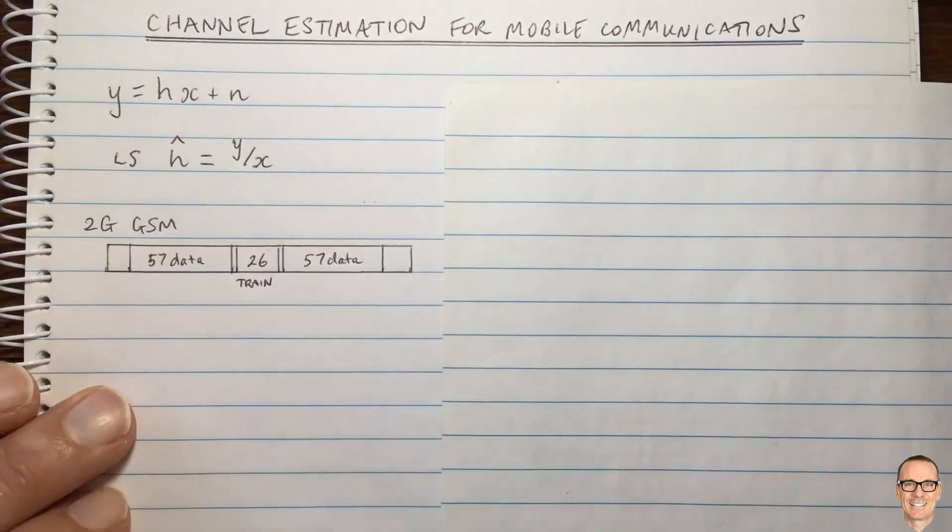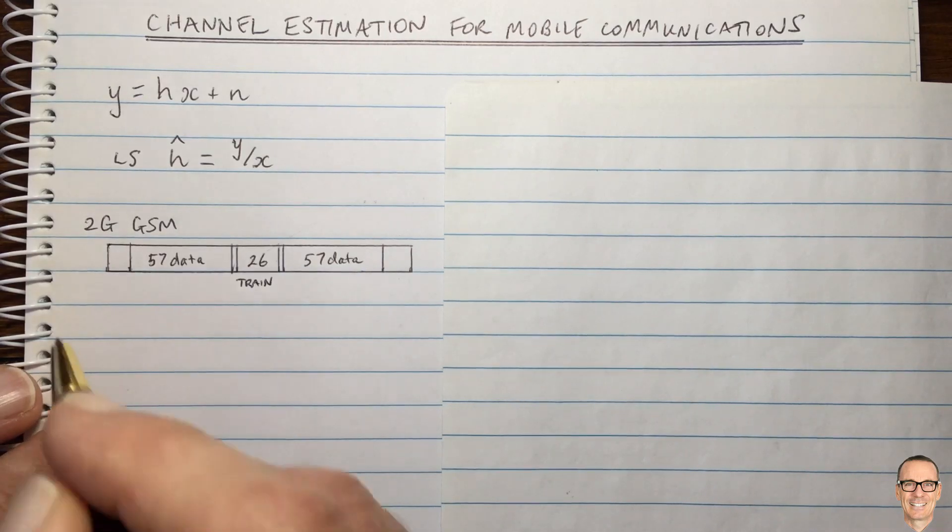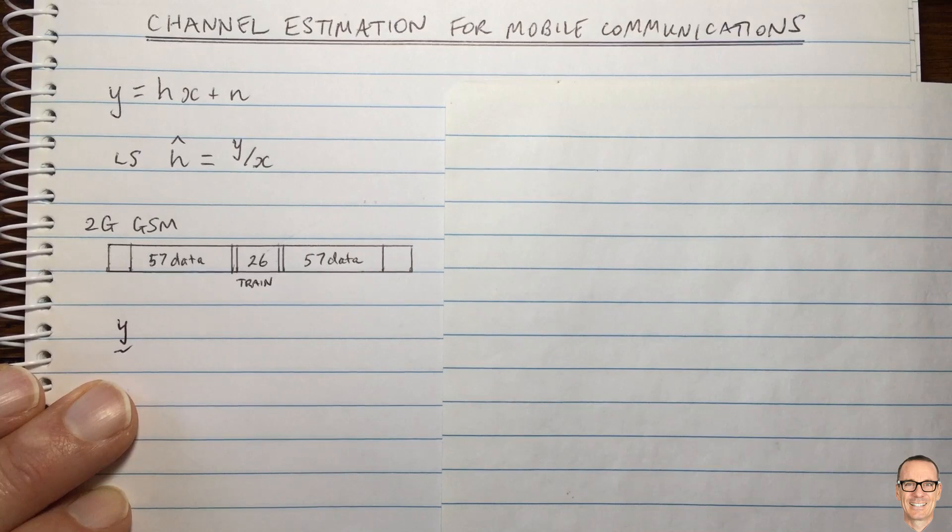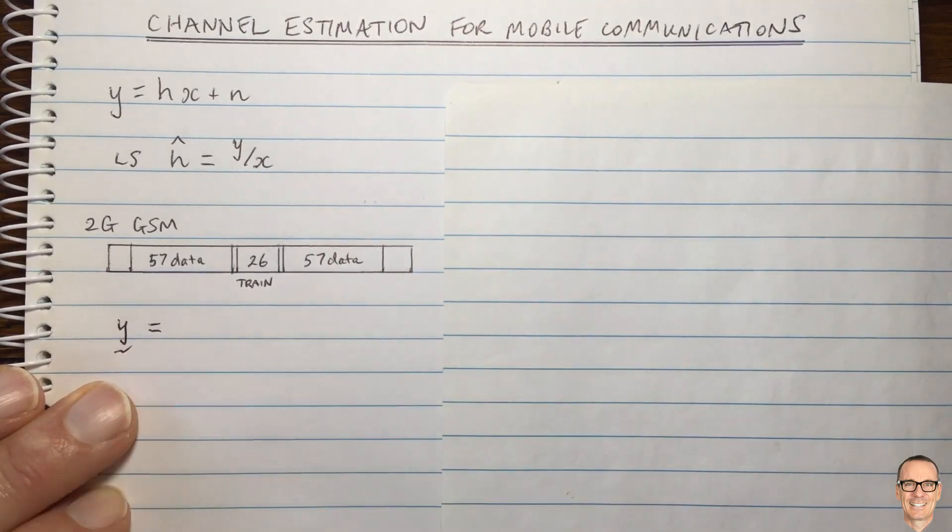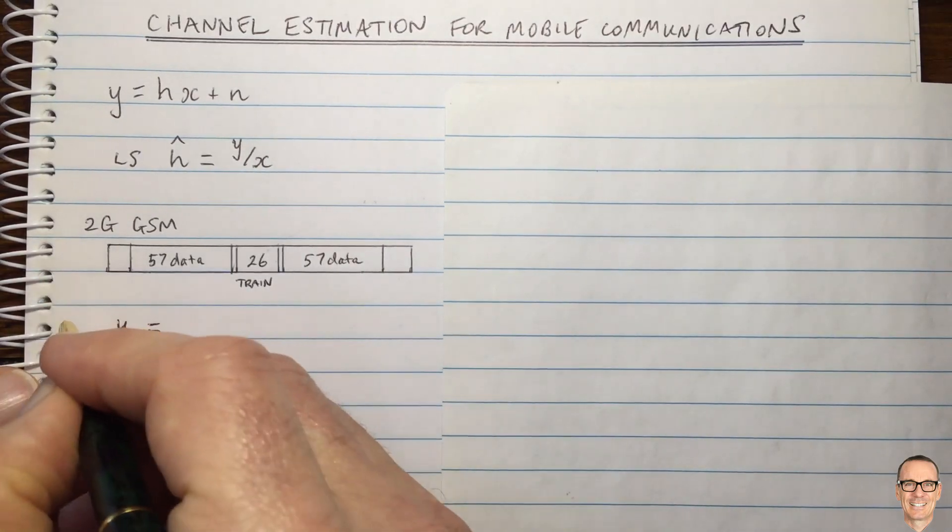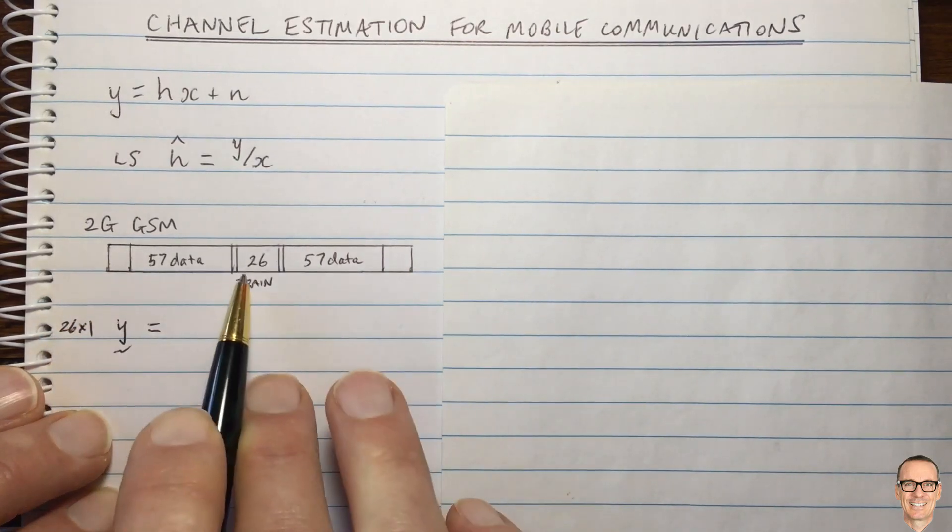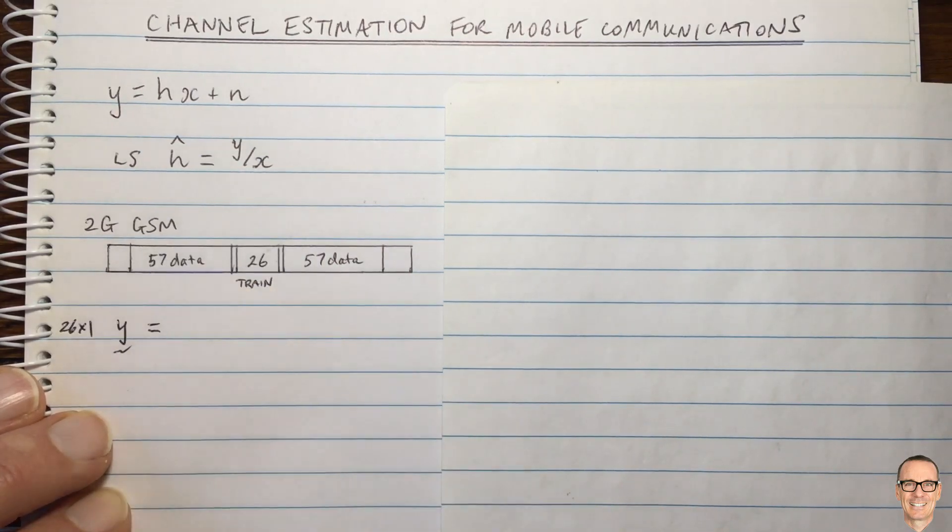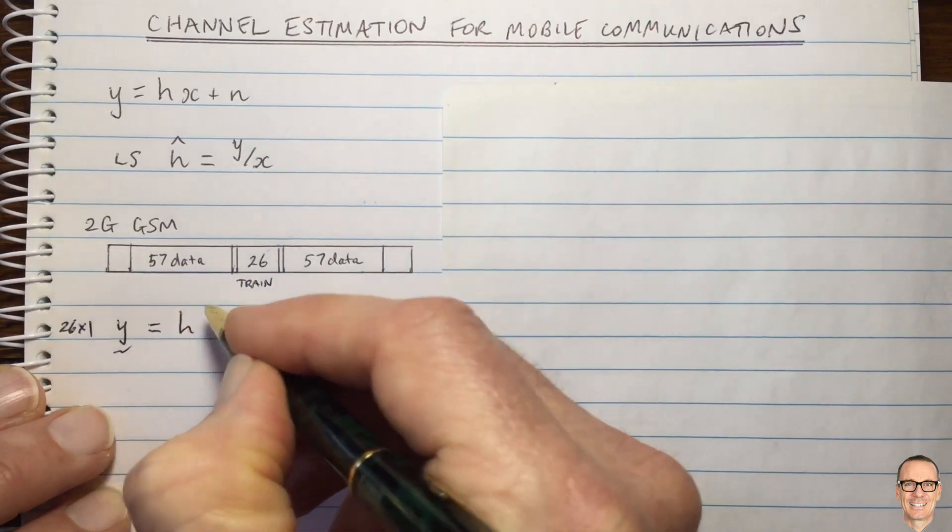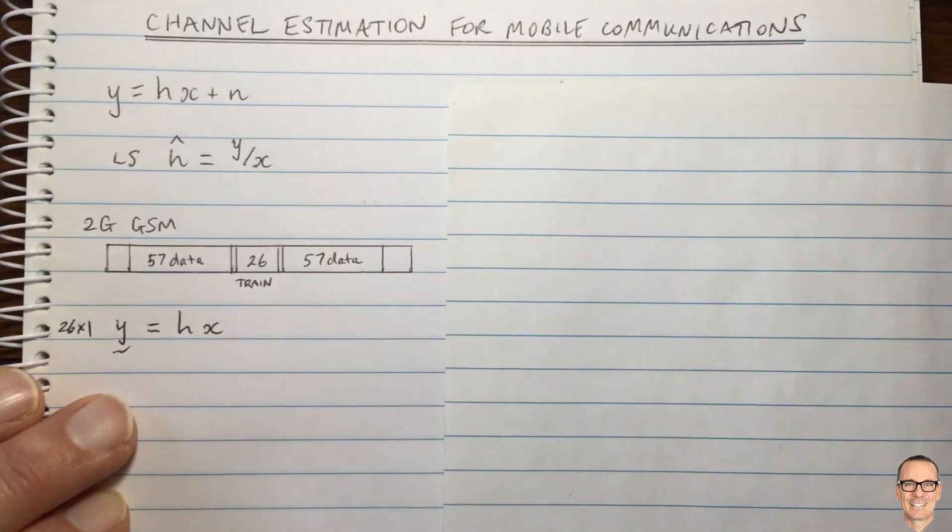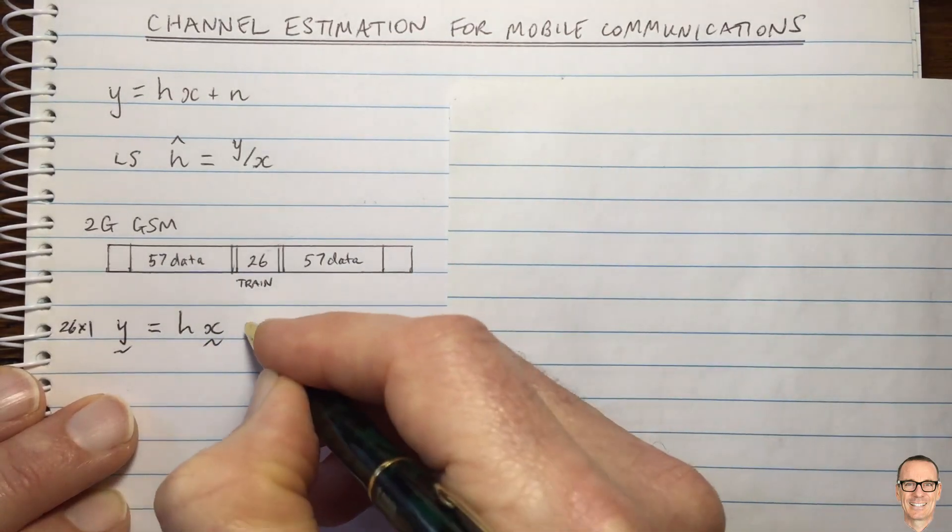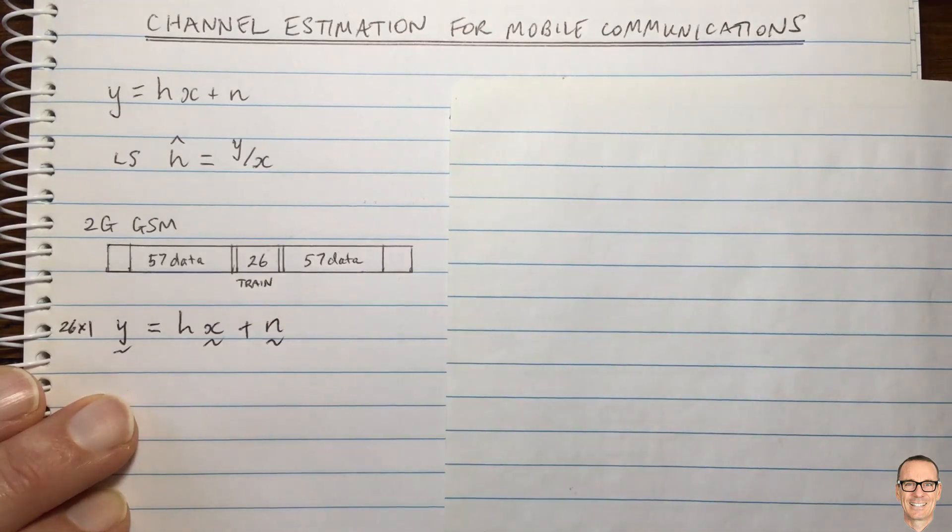We can write a vector version of this equation. We've got a measurement vector y, I'm going to put a tilde underneath it to represent that it's a vector. It's a 26 by 1 vector because there's 26 training bits. If we're sending BPSK in the training, we're sending one symbol per bit. This equals the channel, which we're assuming to be constant during this packet, times the vector of the symbols, plus of course there's noise on each of those measurements.